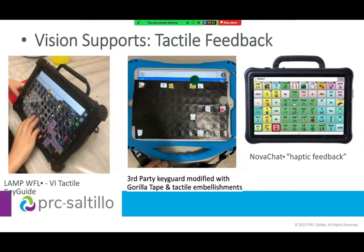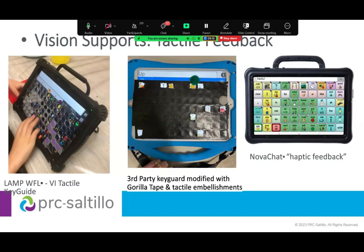The picture in the middle shows a standard iPad with a key guard where gorilla tape covered the entire key guard and certain words were cut out. This little blind boy was also given tactile embellishments — a fluffy pom-pom and different shapes and textures of Velcro — for words he was highly interested in finding and using. The Nova Chat is one of our devices that offers haptic feedback. It's very subtle — you feel it from behind the device — but when you select a button, the device vibrates just slightly, which for certain users can be very helpful.